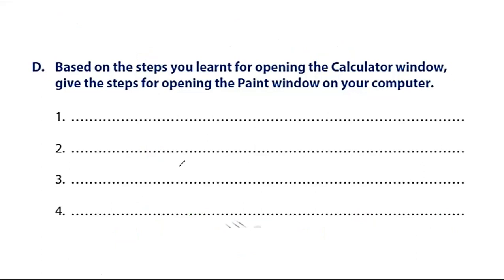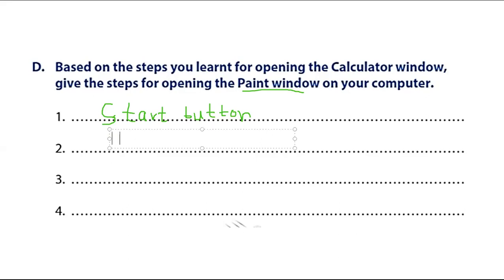This is the last activity — how to open the Paint program. You have to write four steps. Step one: click on the start button with your mouse. Step two: click on 'All Programs' — if you are using Windows 7, click on 'All Programs'.